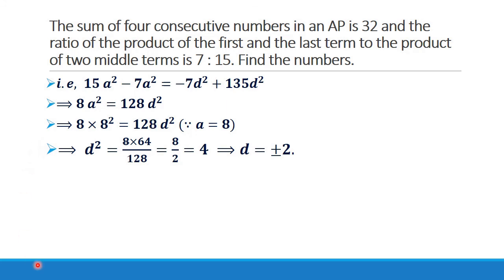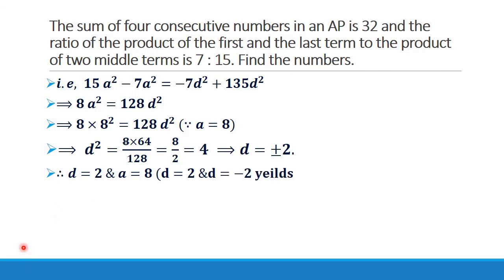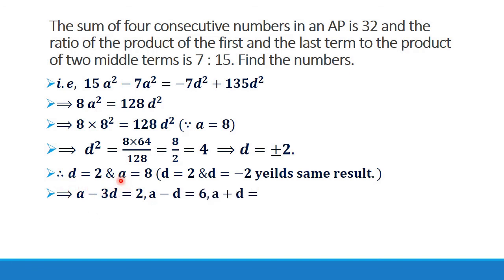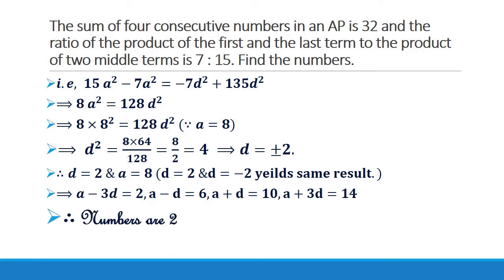Now we are going to form the AP. We have D equal to 2 and A equal to 8. The first term is A minus 3D: 8 minus 6 equals 2. Next, A minus D: 8 minus 2 equals 6. Then A plus D: 8 plus 2 equals 10. And A plus 3D: 8 plus 6 equals 14. Therefore the numbers are 2, 6, 10, and 14.